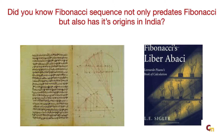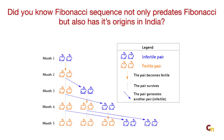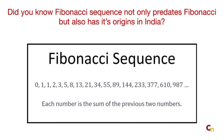How many pairs of rabbits will be born in a year, starting from a single pair, if each month each pair gives birth to a new pair which becomes reproductive from the second month? The solution to this problem is the famous Fibonacci sequence, wherein each number in the series is the sum of the previous two.